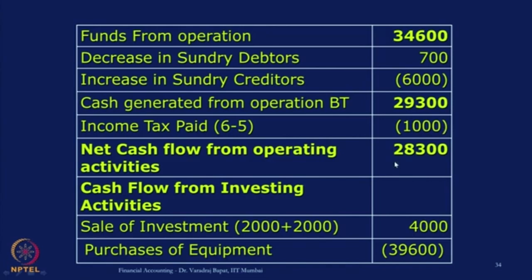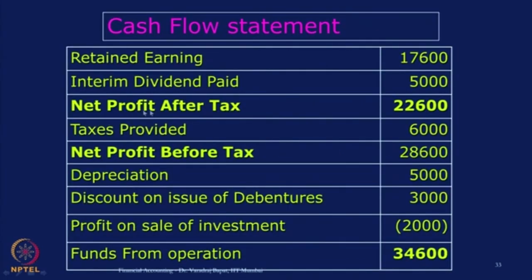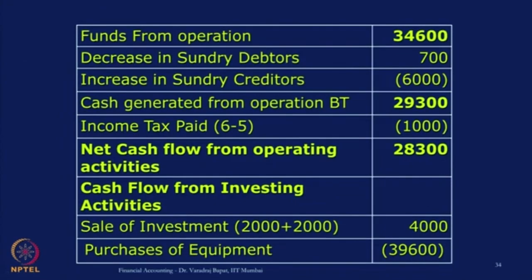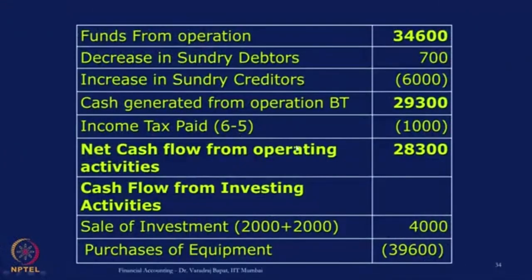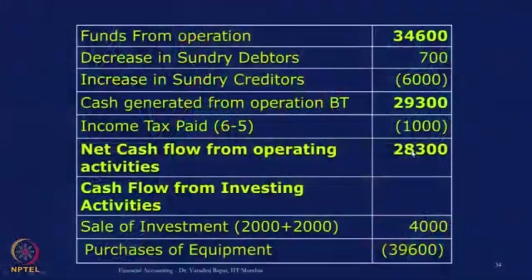Tax always comes 2 times in the cash flow: net profit after tax — add tax provided; and what is actually paid is to be deducted. That is why taxes are shown twice in the cash flow — what is provided is added, and what is actually paid is deducted because it represents outflow. You cannot show the net effect; you have to add 6,000 and reduce 1,000. This gives us net cash flow from operating activities, which is 28,300 positive.